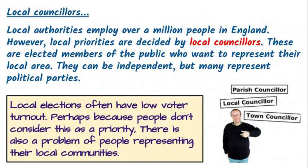The last thing to mention is the role of local councillors. Local authorities employ over a million people in England — people who work in council offices and deal with administration. However, local priorities are decided by people called local councillors. These are elected members of the public who want to represent their local area. They can be independent or representative of political parties. There is a problem, though: local elections often have a low voter turnout, mainly because people don't see local government as a particular priority — they're more interested in what happens at a national level.